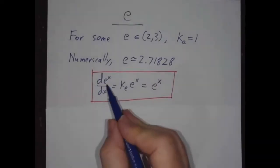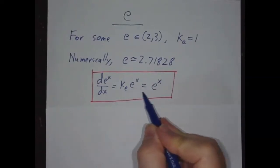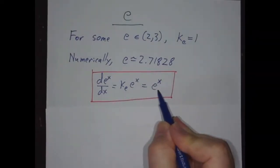And so the derivative of e to the x is ke times e to the x. But ke is 1, so the derivative of e to the x is e to the x. It's a function that equals its own derivative, world's easiest derivative.